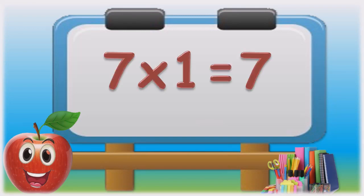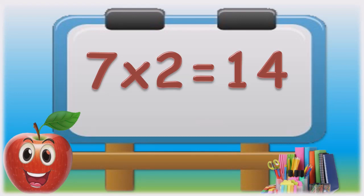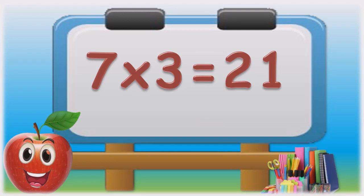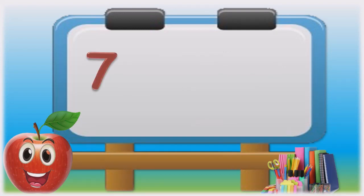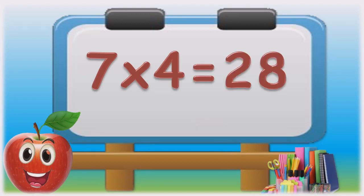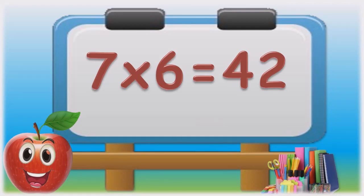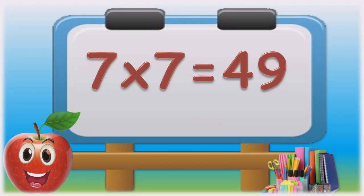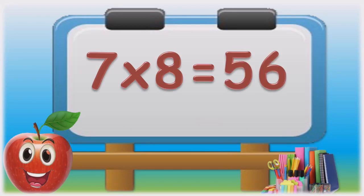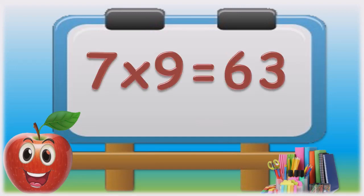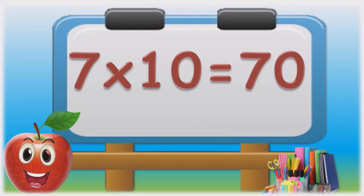Seven ones are seven. Seven twos are fourteen. Seven threes are twenty-one. Seven fours are twenty-eight. Seven fives are thirty-five. Seven sixes are forty-two. Seven sevens are forty-nine. Seven eights are fifty-six. Seven nines are sixty-three. Seven tens are seventy.